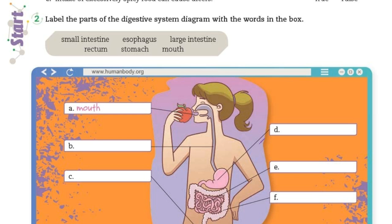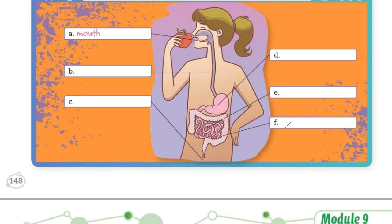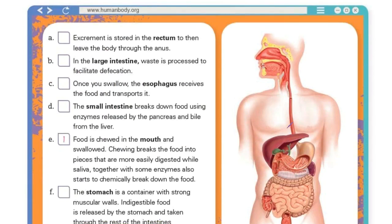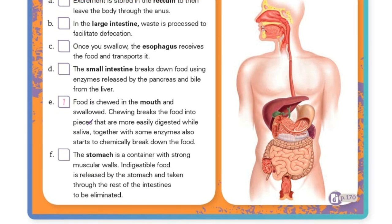Ustedes investiguen qué es lo que va primero, porque en activity number three, first you have to read — primero hay que leer — and you know that you have to underline all the words that you don't understand. Lo mismo siempre. Vamos a encontrar las palabras que no entendamos, subrayarlas y buscarlas para saber qué nos están diciendo.